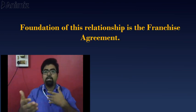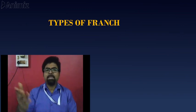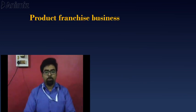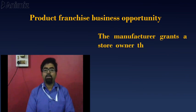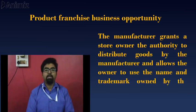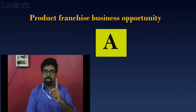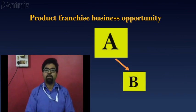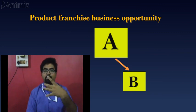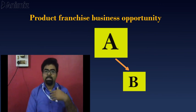Now let us discuss the different types of franchising. There are basically four types. Number one is the product franchise business opportunity. The manufacturer grants a store owner the authority to distribute goods made by the manufacturer and allows the owner to use the name and trademark owned by the manufacturer. So A is allowing B to sell product X in the market — that is product franchising.